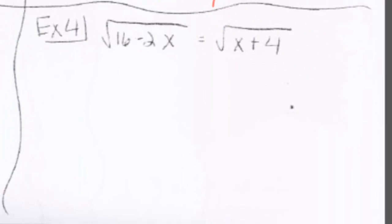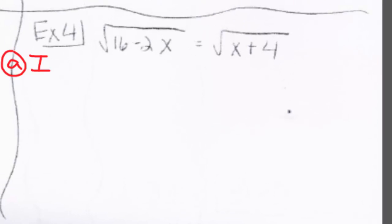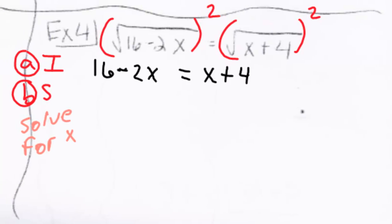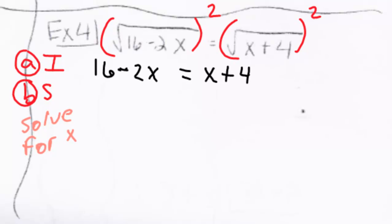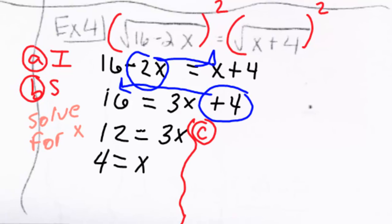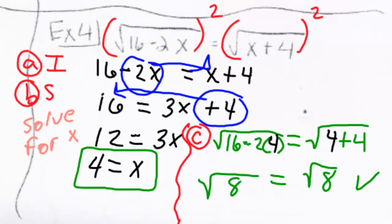Example 4. This is the same type of problem as example 3. There is a radical on each side of the equal sign, so it is considered already isolated. Squaring both sides gives us 16 minus 2x equals x plus 4. Now we have a linear equation and we solve for x, giving us x equals 4. Plugging 4 back into the original equation gives us a true statement, therefore x equals 4 is our answer.